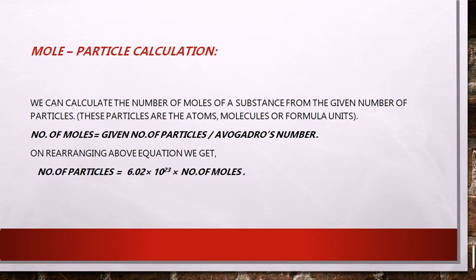The second calculation is mole-particle calculation. To determine the number of particles after finding moles, we use two formulas. For moles: number of moles = given number of particles divided by Avogadro's number. Avogadro's number is 6.02 × 10²³ atoms, molecules, or units. To determine the number of particles: number of particles = Avogadro's number multiplied by number of moles.